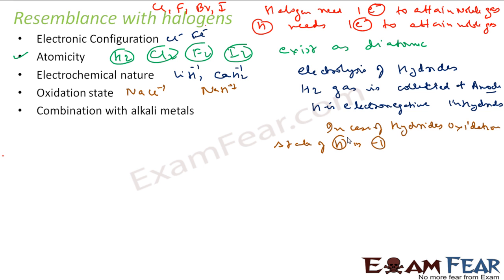The next is combination with alkali metals. Alkali metals we have sodium, potassium, lithium. Let us try to combine with sodium. If you combine sodium with hydrogen it becomes NaH. If you combine sodium with halogen, NaCl. Similarly lithium if you want to combine with hydrogen it becomes LiH, lithium combined with chlorine becomes LiCl. So if you see the combination with alkali metals, the combination pattern is all similar.